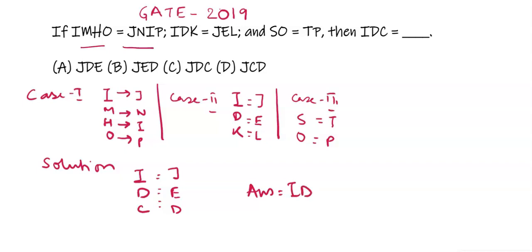IDC equals JED. So the correct option is option number B. This is the correct answer.